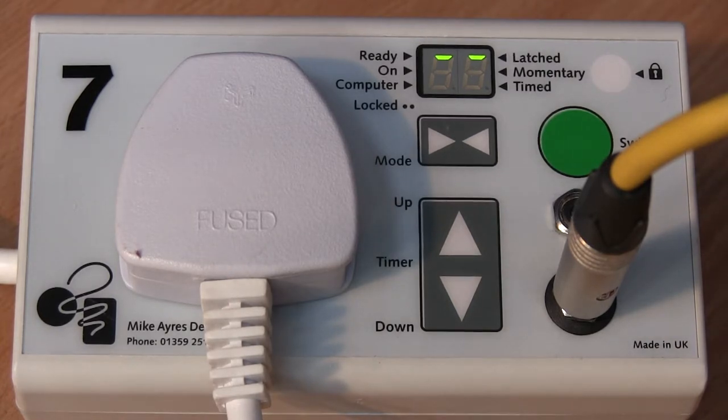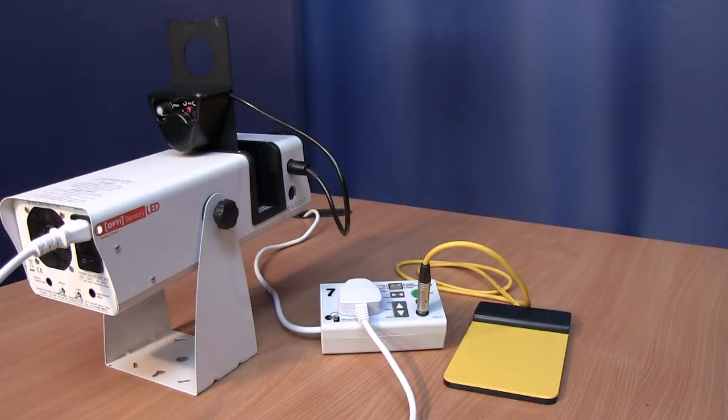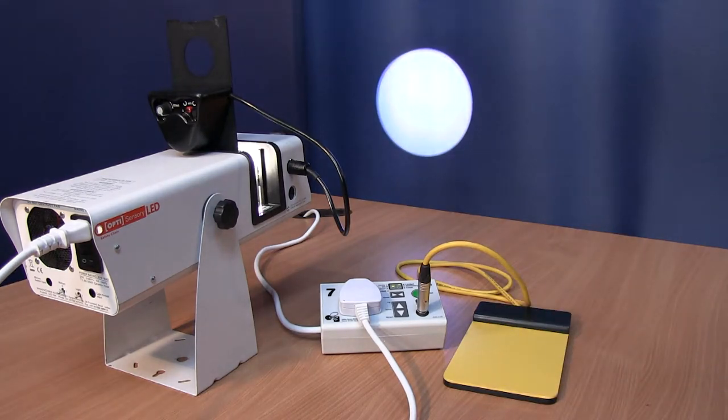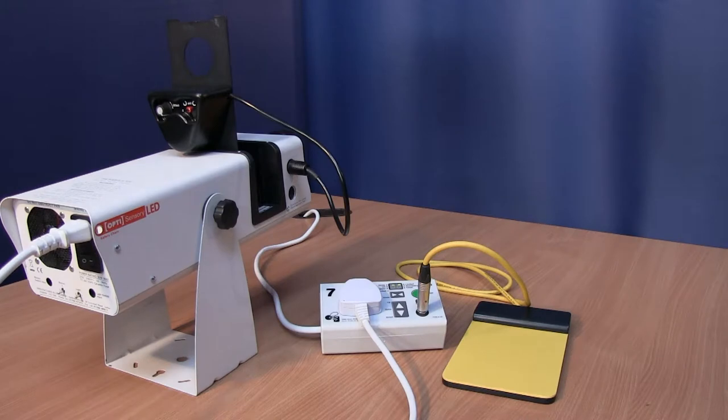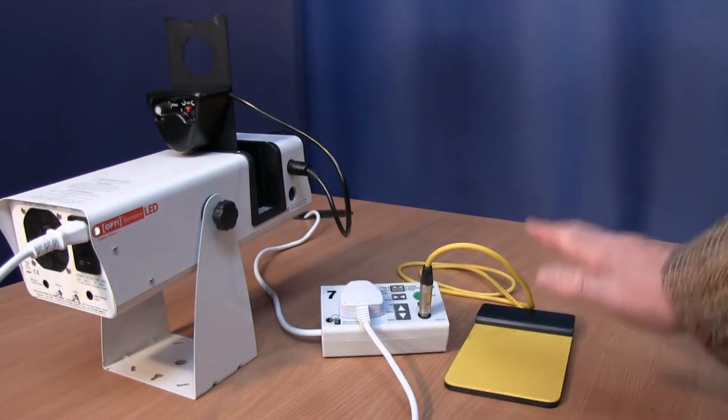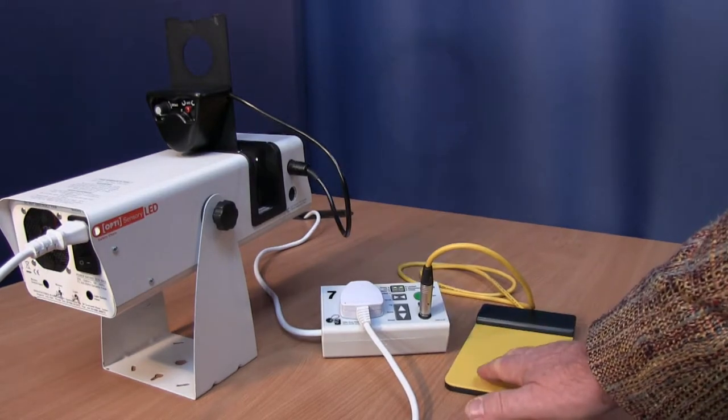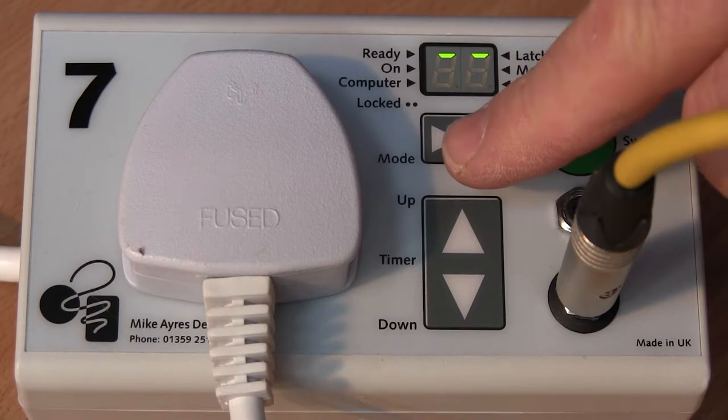The first mode of operation we're going to look at is latched. This means you press the switch once and it switches the appliance on. You press the switch again and it switches the appliance off. So latched, try it. Once for on and once for off. Now go from latched by touching the mode button to momentary.